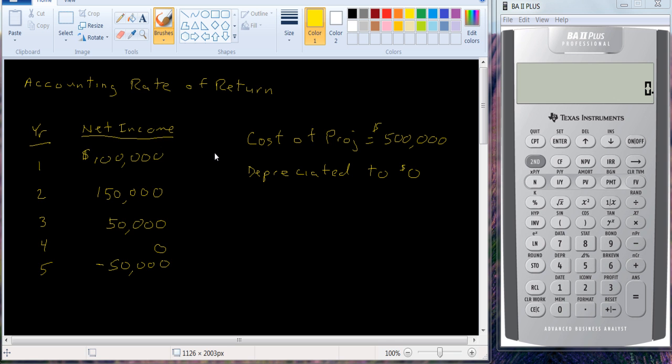If we assume that the cost of the project is, in this case, I have some numbers here, $500,000, it's depreciated over a five year period to zero. We figure out what the average book value is, we figure out what the average net income is, and we can figure out what the accounting rate of return is.